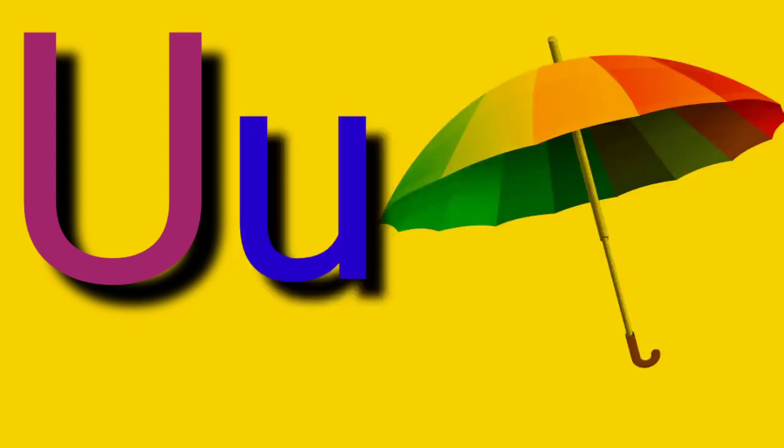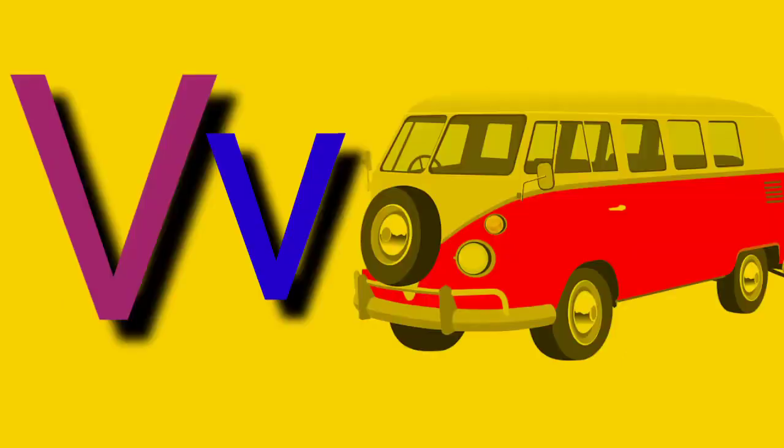Capital U, small letter U, U for Umbrella. Capital V, small letter V, V for Vine.